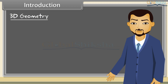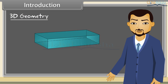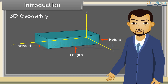Real-world objects exist in three dimensions. For example, a cuboid or a box is completely described by three parameters: length, breadth and height. Corresponding to that, each point in the Cartesian space has three coordinates: x, y and z.